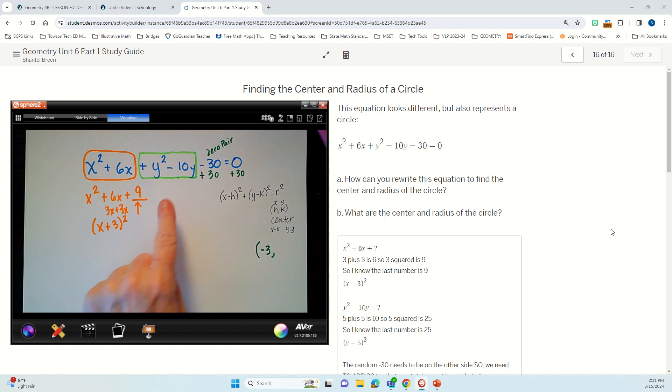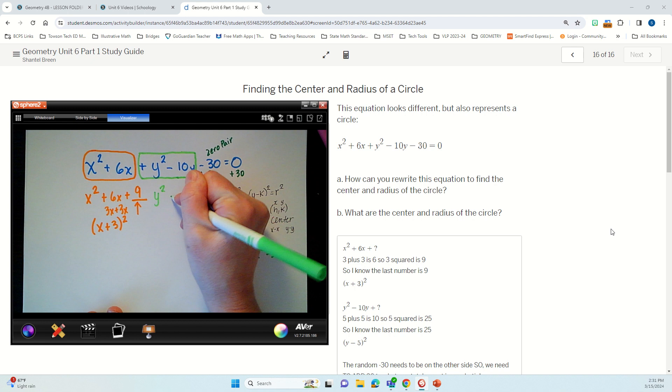All right, now let's try to move over here and find the y. Okay, so we have y squared minus 10y plus something. Remember that it's always going to be plus, because anything squared, whether it's negative or positive, will always be positive.